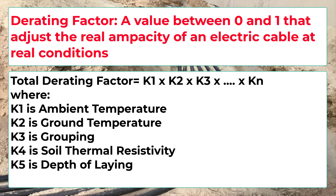The rating factor equals k1 × k2 × k3 × ... × kn, where k1 is the correction factor for ambient temperature, k2 is for grouping or bundling, k3 is for installation method, and so on for any other relevant conditions.